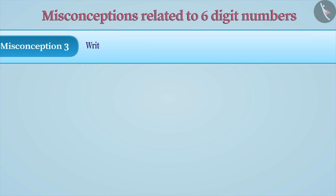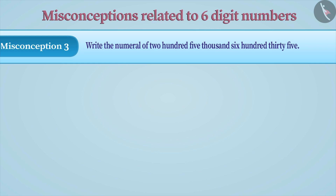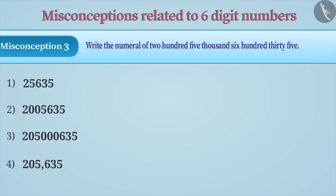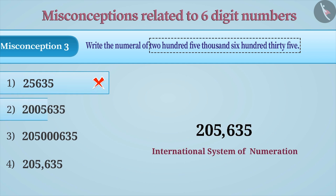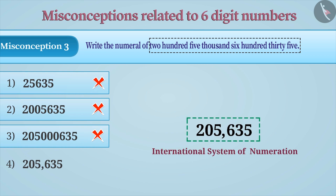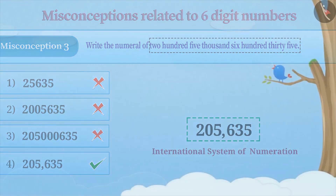Misconception 3: Write the numeric form of 200,5635. At times, 0 is missed out while writing the number from the number name. Hence, option 1 is wrong. In the same manner, due to lack of understanding of the International System of Numeration, options 2 and 3 may be selected, which are also wrong answers. With the correct understanding of number representation, option 4 is chosen as the correct option.